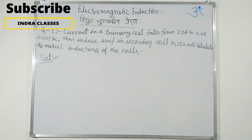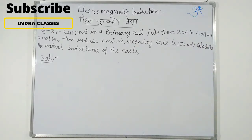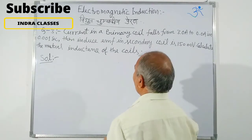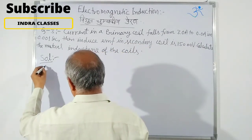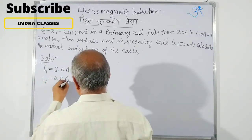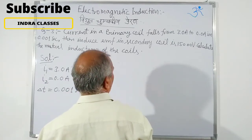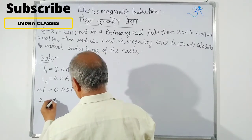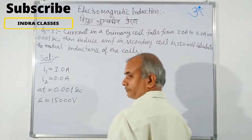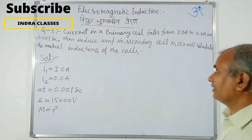In 0.01 seconds, the induced EMF in the secondary coil is 15,000 volts. Calculate the mutual inductance of the coil.